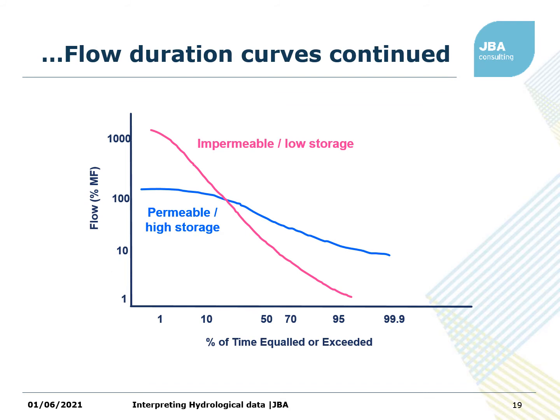The shape of the flow duration curve can tell you about what kind of catchment you've got, particularly the slope. This is plotted on a log scale, because a flow duration curve can disguise what's happening at the low flow end since high flows are so much larger. The pink line is an impermeable low-storage catchment — going back to the blue flashy hydrograph — where high flows are high but it drops quickly to low flows. The blue line shows a permeable high-storage catchment where high flows are attenuated, reduced and spread out over time, and low flows are also supported. The shape of the curve is much flatter than in the impermeable catchment.